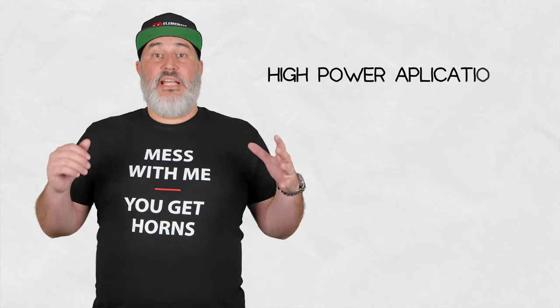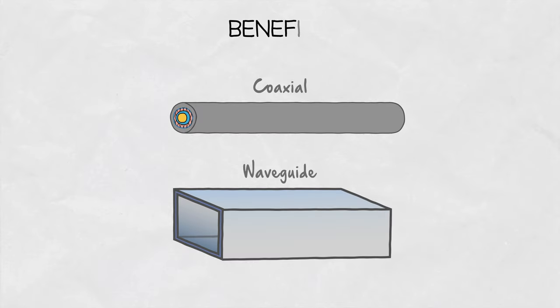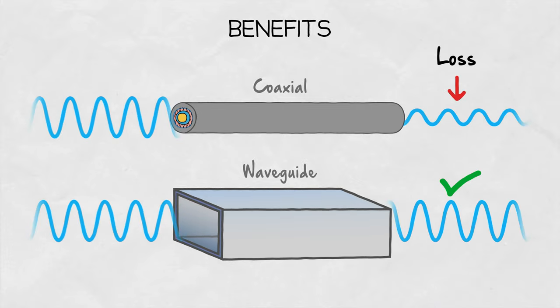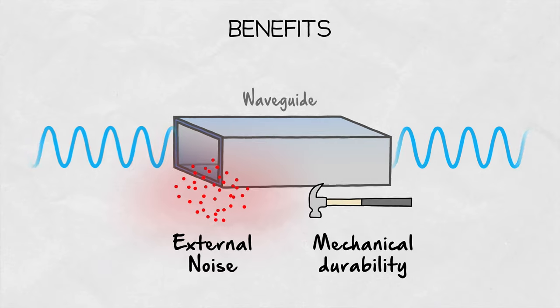Waveguides are particularly useful in high-power applications or where very low loss is beneficial. Other transmission lines such as coaxial cables always suffer from higher losses than waveguides. Additionally, they are also immune to external noise and have high mechanical durability.